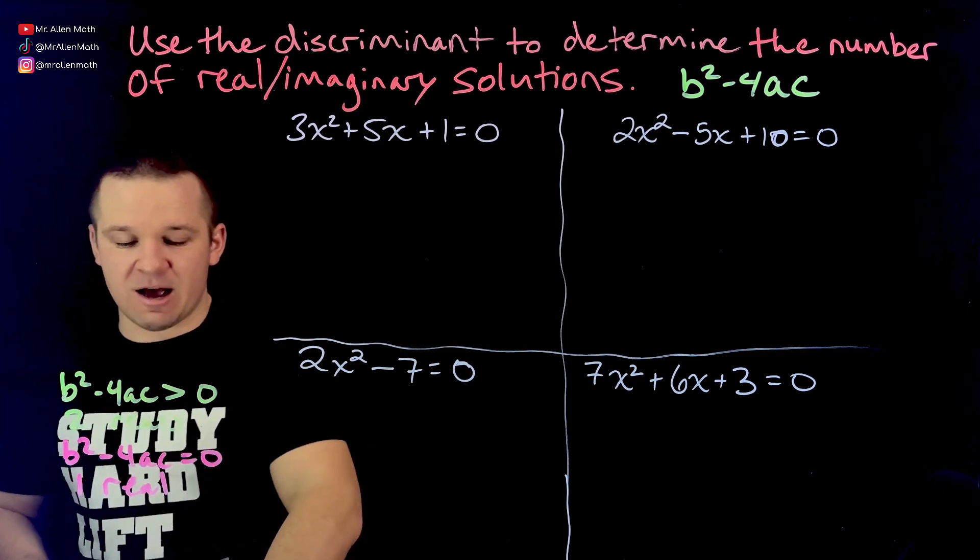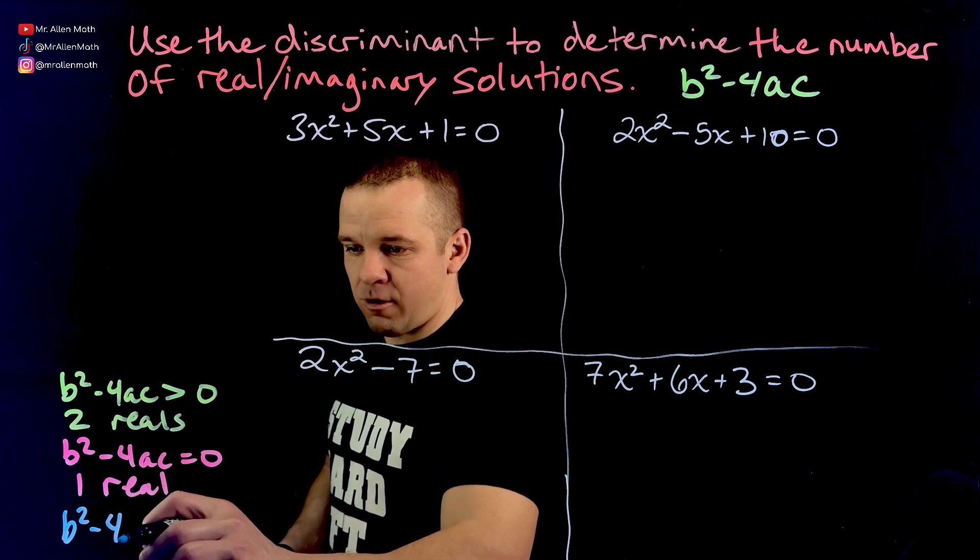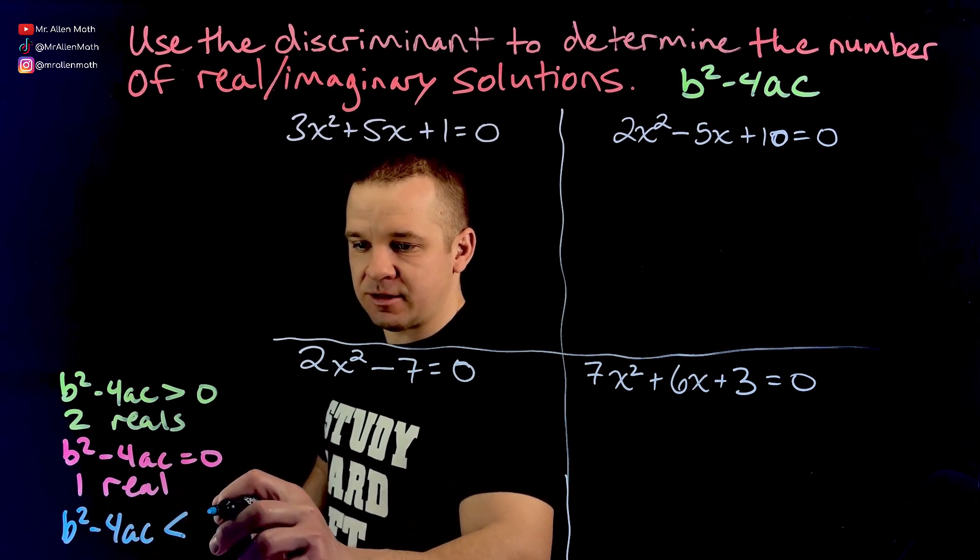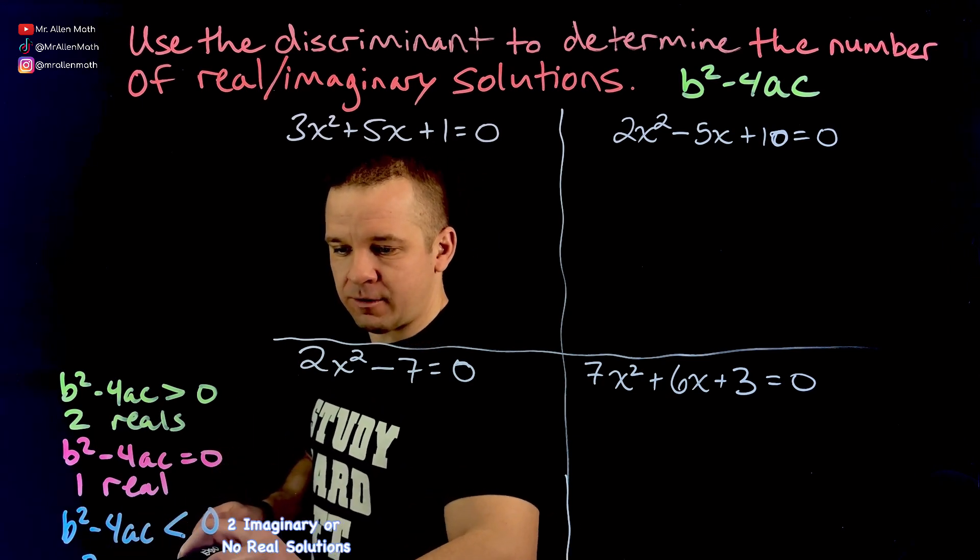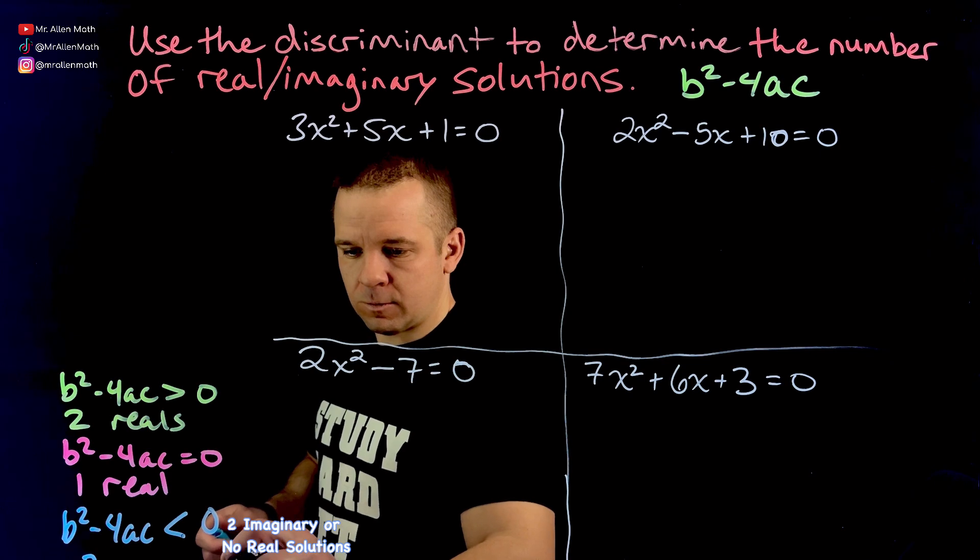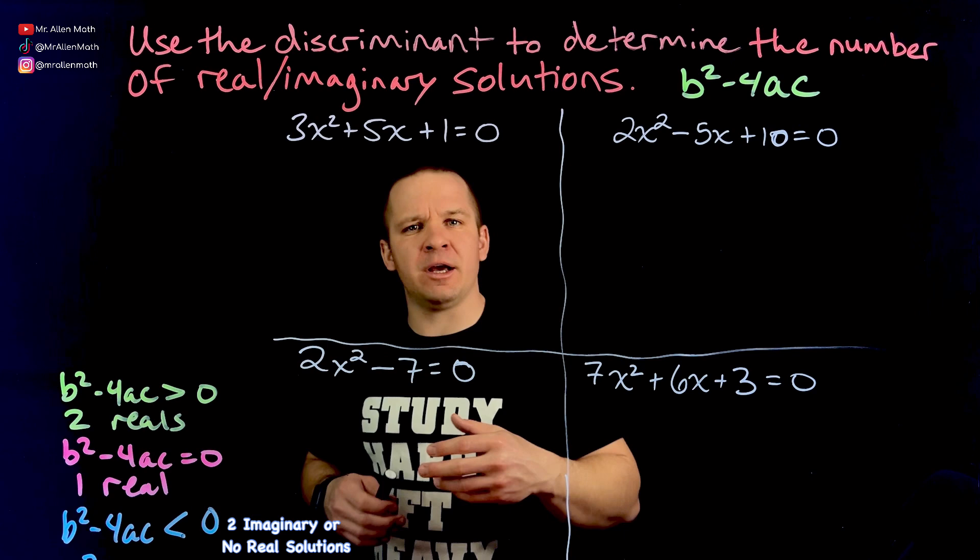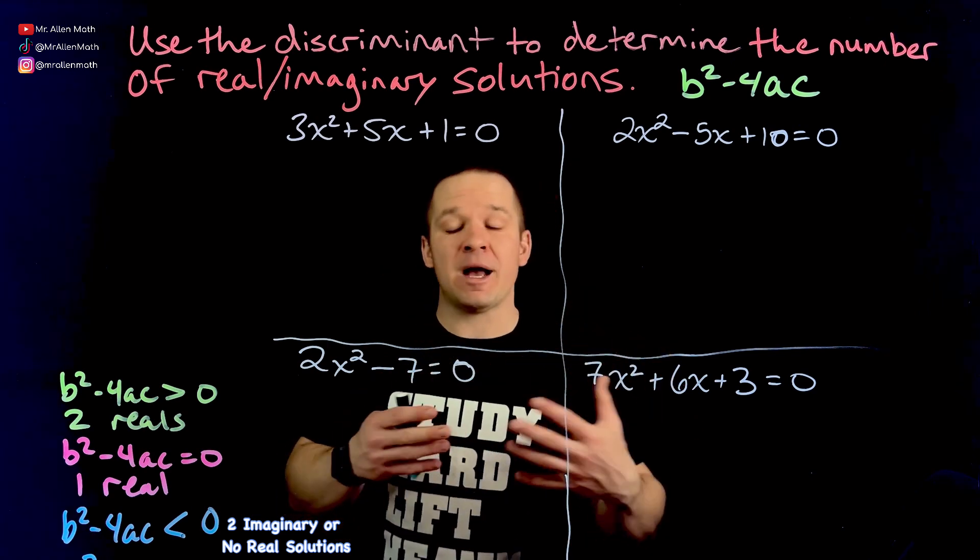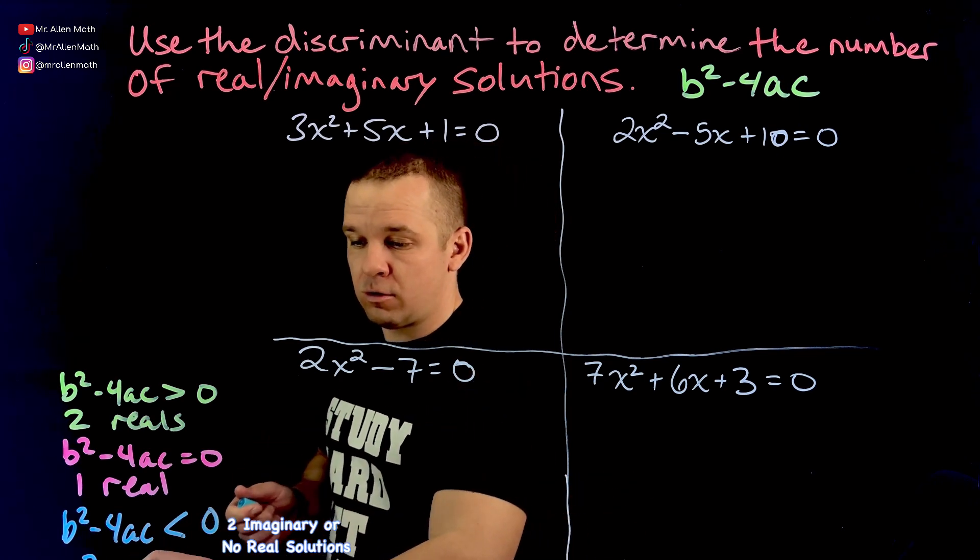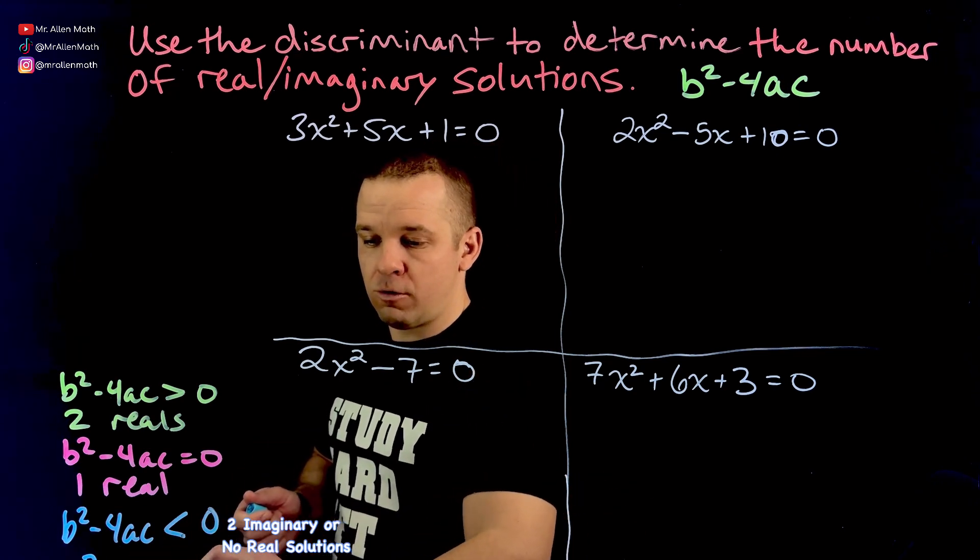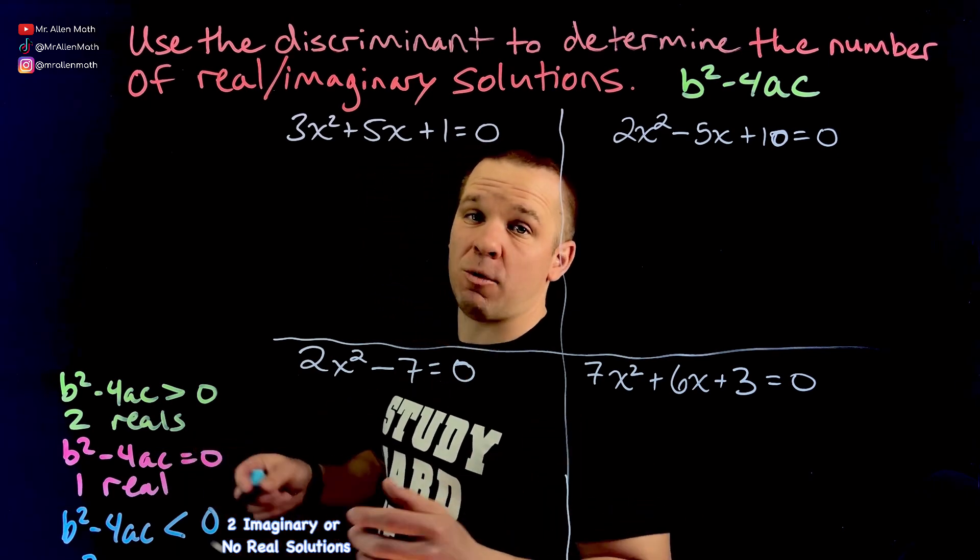And then if we have B squared minus 4AC is less than zero, aka negative, then we have two imaginary. Or you could say like no real solutions. It depends on what level of math you're in right now. If you know about imaginary solutions or not, you may or may not be asked to say two imaginary or no real solutions. So one of those two would be acceptable depending on what level of mathematics you're in.